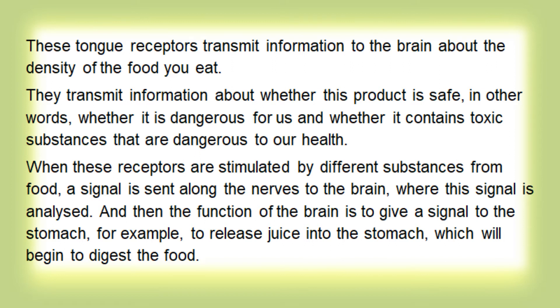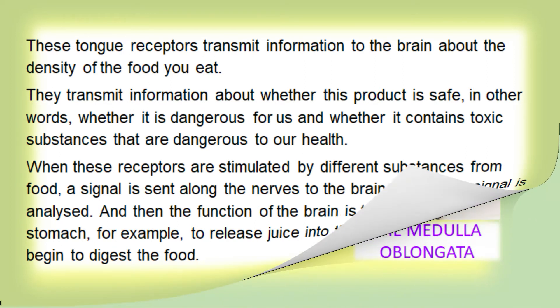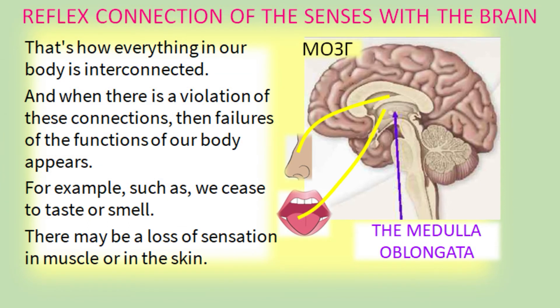Then the function of the brain is to give a signal to the stomach — for example, to release juice into the stomach, which will begin to digest the food. That's how everything in our body is interconnected. And when there is a violation of these connections, failures of the functions of our body appear — such as ceasing to taste or smell, or loss of sensation in muscle or in the skin.